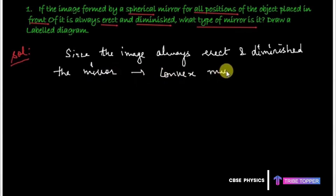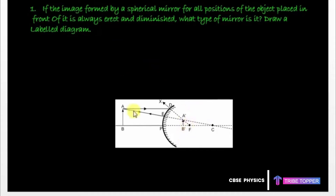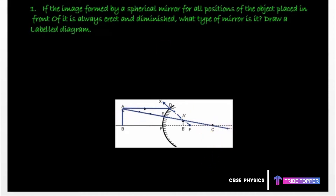Now we'll draw the labelled diagram to show how the image is formed. AB is the object and we draw two rays. The first ray goes parallel to the principal axis and after reflection from the convex mirror it will appear to be coming from the focus. The other ray passes through the centre of curvature, and when reflected back it retraces its path, appearing to come from the centre of curvature. The image is formed where the reflected rays appear to intersect, and this image is always erect and diminished.